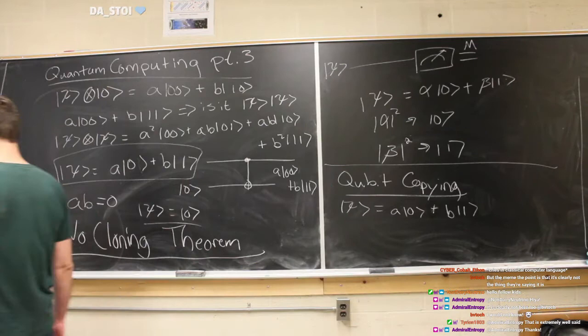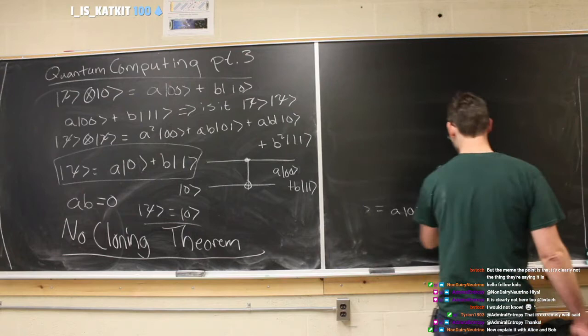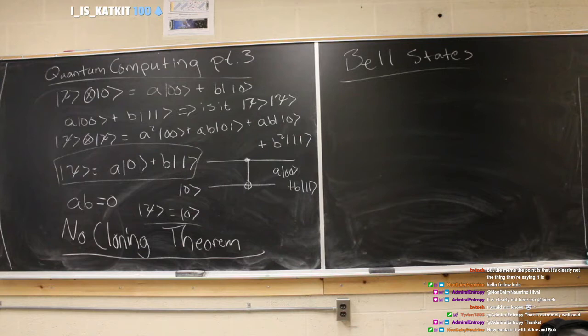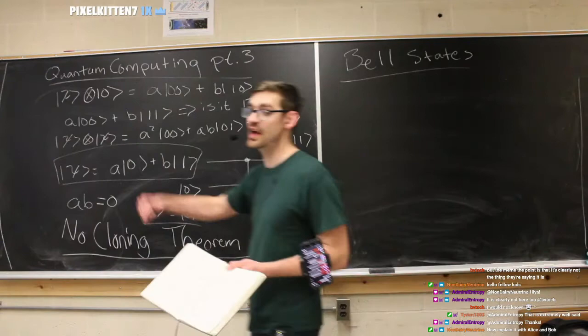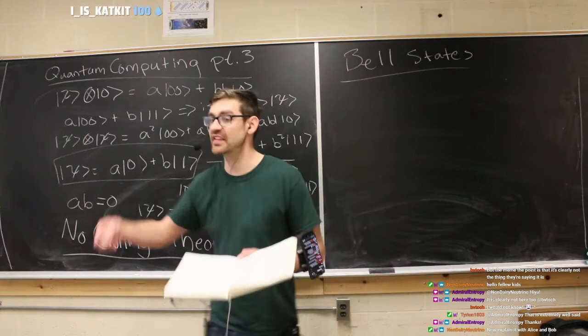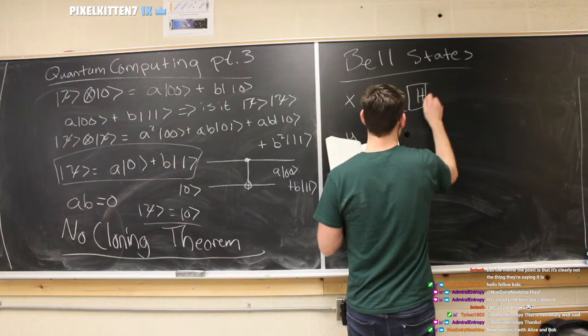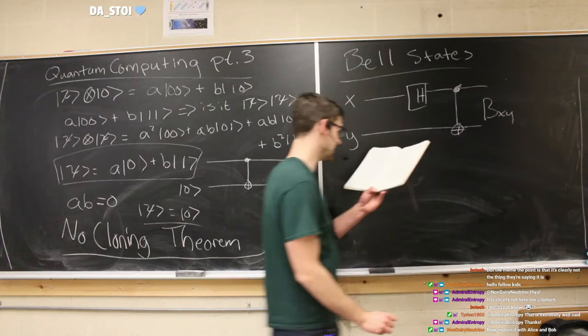Now let's talk about Bell states. Bell states are the interesting states where, if you know something about one qubit, you can infer something about the other qubit — that is the whole concept of entanglement of qubits. Let's take a Bell state: we're going to start with an x and a y bit, run it into a Hadamard gate, and then into a controlled NOT gate — control and target. Out of this we get the Bell state b_{xy}.